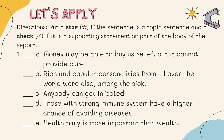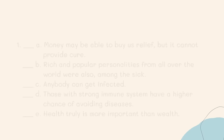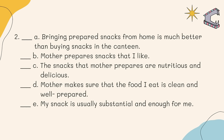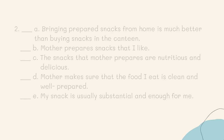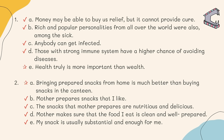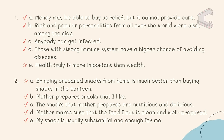Directions: Put a star if the sentence is a topic sentence and a check if it is a supporting statement or part of the body of the report. The correct answers are: Number one — letters A, B, C, and D are the supporting statements, and letter E is the topic sentence. Number two — the topic sentence is letter A, and the supporting statements are letters B, C, D, and E.